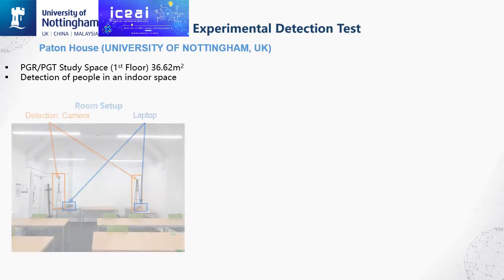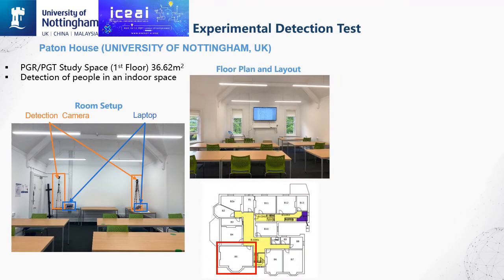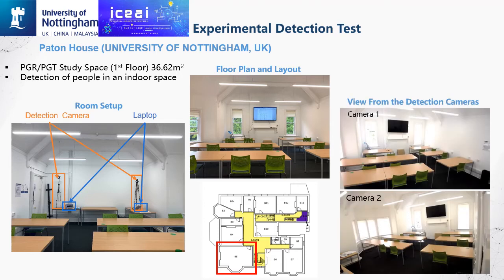A study space in Patton House building at the University of Nottingham was selected to test the proposed vision-based detector. The model was deployed from a connected laptop to the camera, as shown, from the room setup to allow real-time detection during the experimental test. Here is the room floor plan and layout, and here is the view from the detection camera, which provides a wide-angle vision enabling a large detection region.